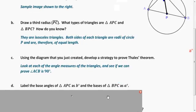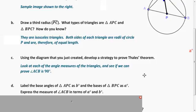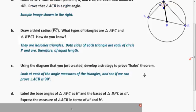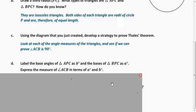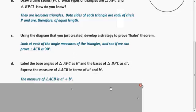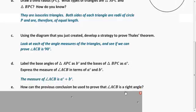So let's label them according to the strategy here. We want to express the measure of angle ACB in terms of A and B, A degrees and B degrees. So we want to call the base angles on the left-hand side A degrees, and the base angles on the right-hand side B degrees. So what can we say about angle ACB? What's its measure going to be? Well, its measure is simply A plus B.